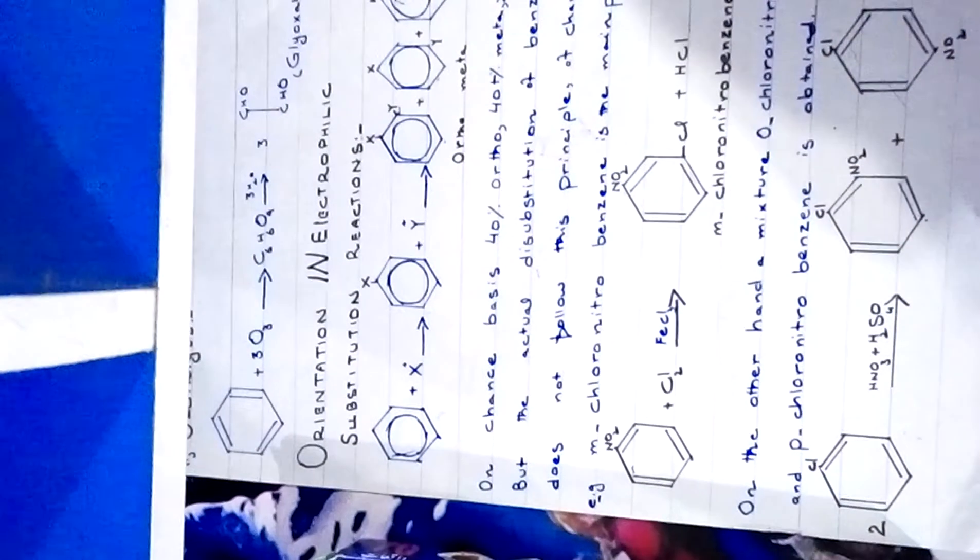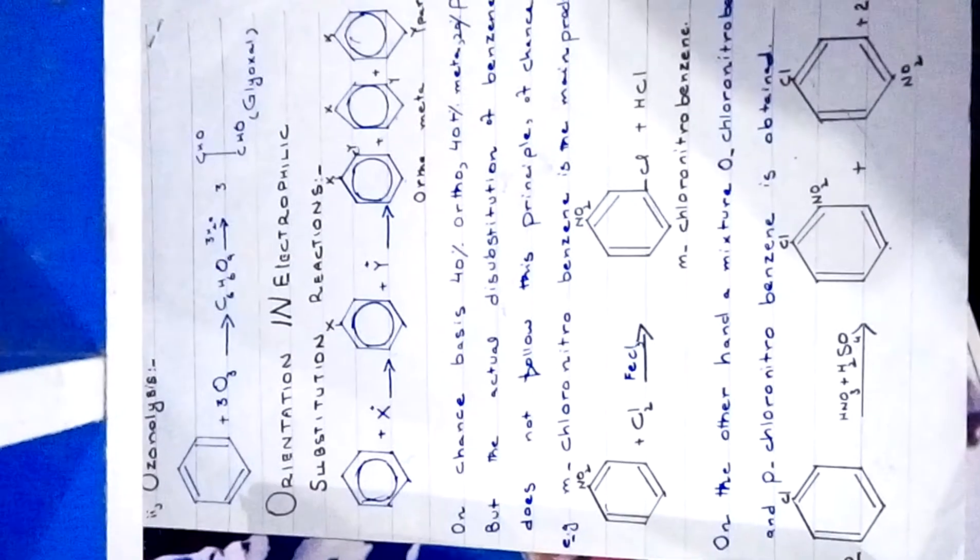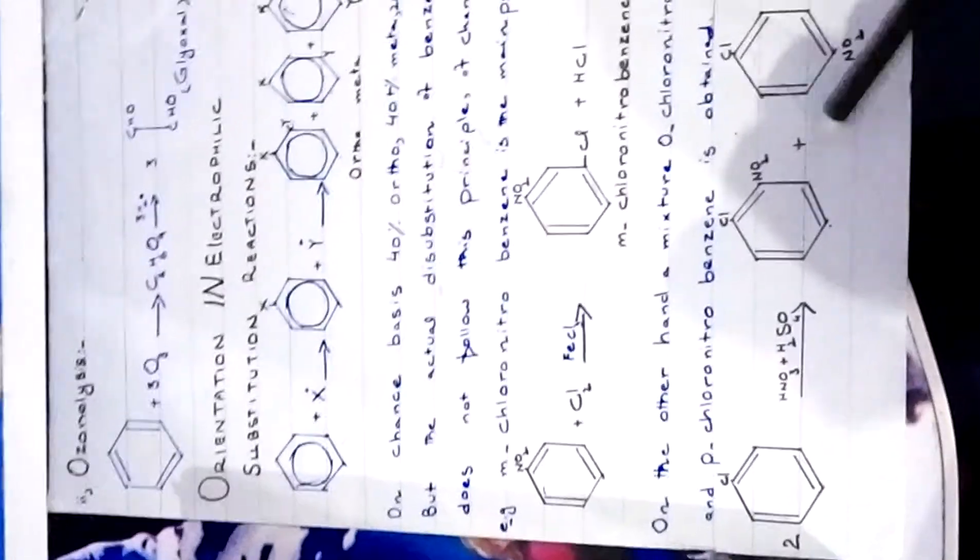On the other hand, a mixture of ortho-chlorobenzene and para-chlorobenzene is obtained from the nitration of chlorobenzene. Here chlorobenzene is present, and it will direct incoming groups to ortho and para positions.